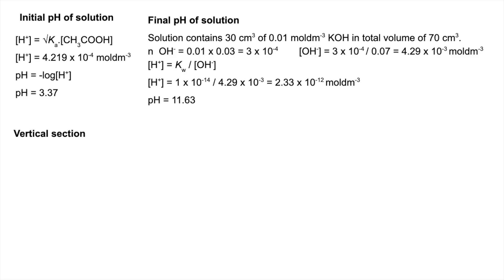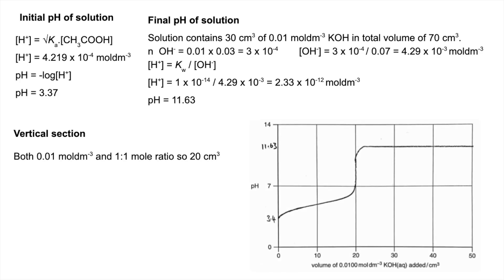So our curve needs to start at 3.37 and finish at 11.63. The vertical section: the acid and alkali are both at 0.01 mole per decimeter cubed concentration, it's a one-to-one ratio. So if you've got 20 cm cubed of acid you're going to need 20 cm cubed of the alkali.